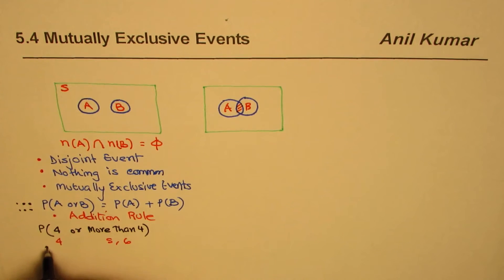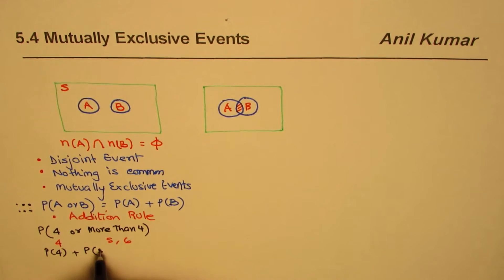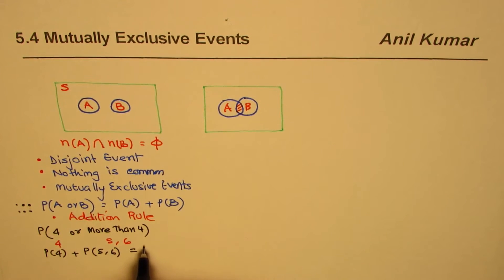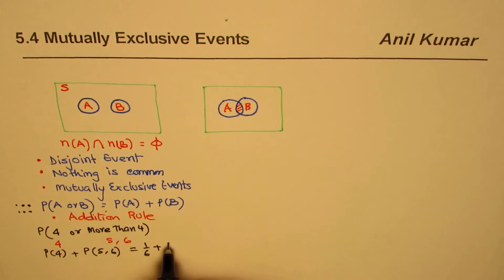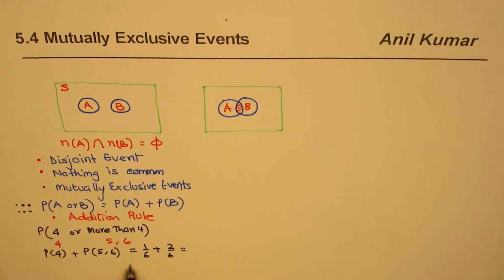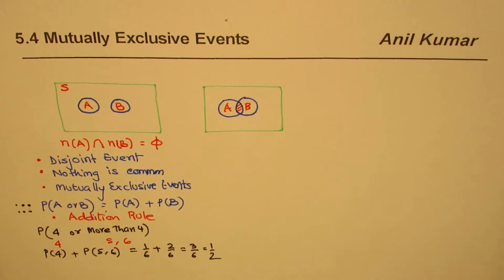There is nothing common between four and {five, six}, so the probability will be the probability of getting four plus the probability of getting five or six. There is only one four out of six, so that's 1/6, and five and six are two elements, so 2/6. Combined, you get 3/6 or one-half.